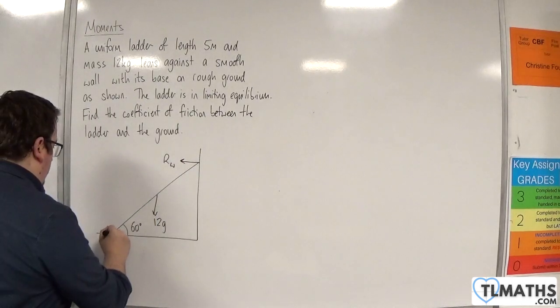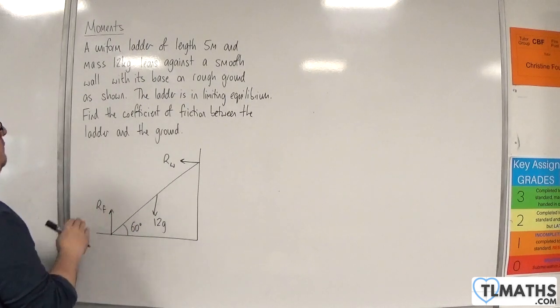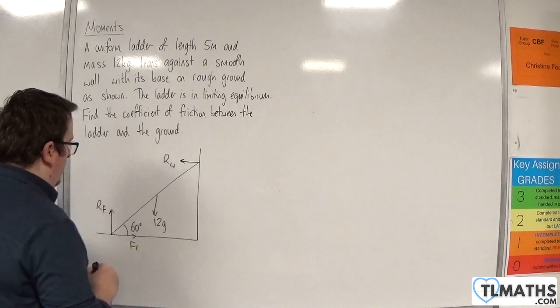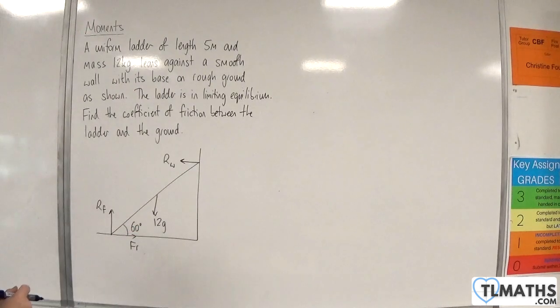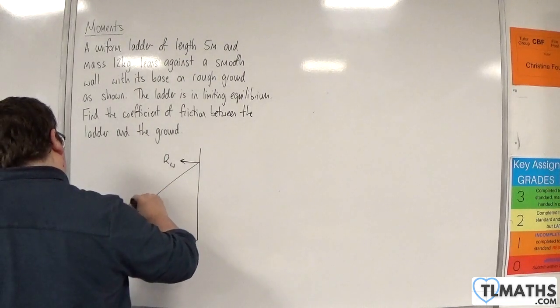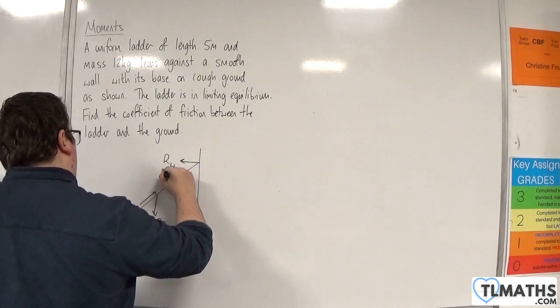And it's in contact with the floor, so there will be a reaction force with the floor. And the floor is rough, so there will be a frictional force, let's label that FR. And the length is 5 metres, so that's 2.5 metres. And that's 2.5 metres.